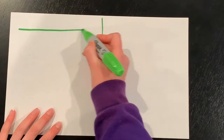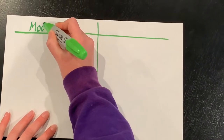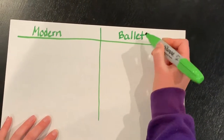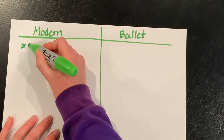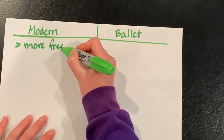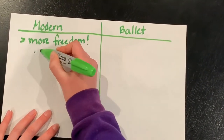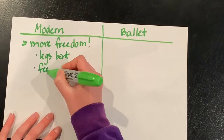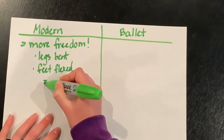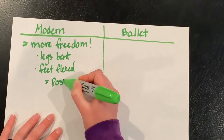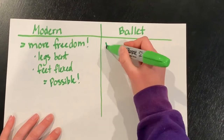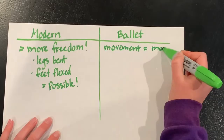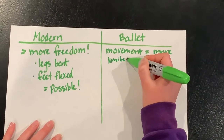The main difference between modern dance and ballet is that modern dance offers more freedom. If the dancer or choreographer wants to do movement with the legs bent and the feet flexed, they can, whereas in ballet the invention of movement and freedom of expression is very limited. Ballet is a structured art form, one in which the movements have been around for hundreds of years and are repeated the same way with little variation.